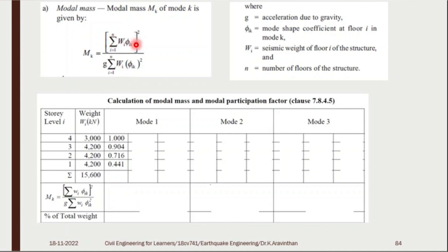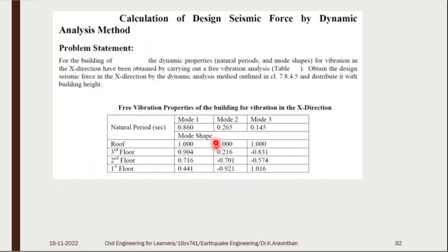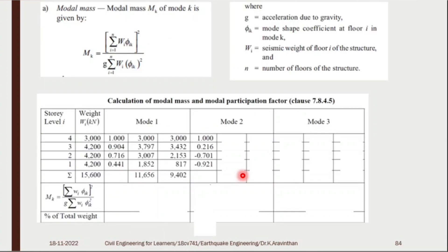Multiply W × φ and write in the next column. Then multiply these two values and write in the next column: 1 × 3000 for the roof, 0.9 × the floor weight for the next. Add all the values and write the total. For the second mode shape, the values are 1, 0.216, 0.701, 0.921 — write these in the same way.